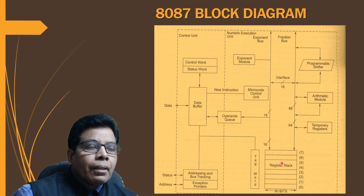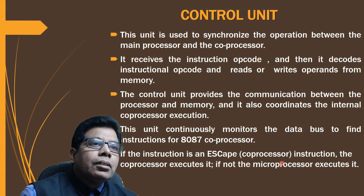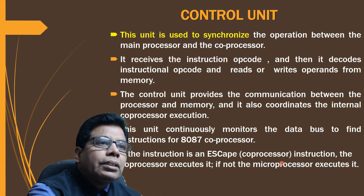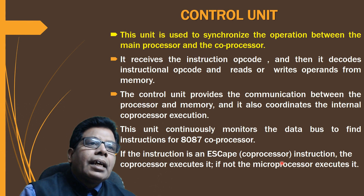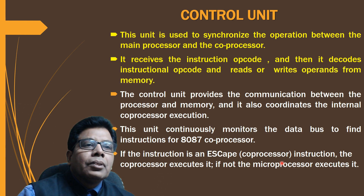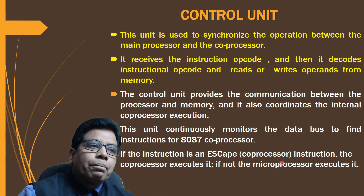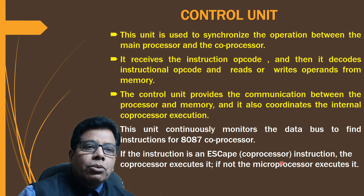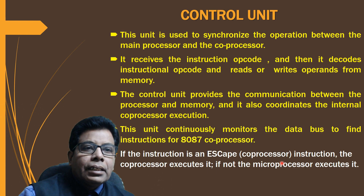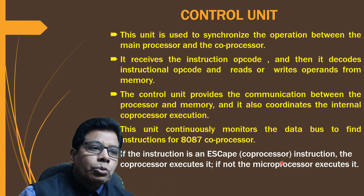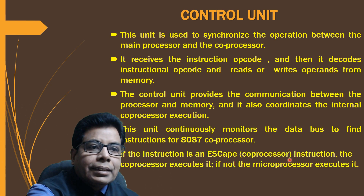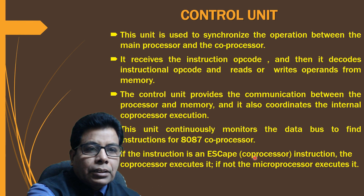The control unit is used to synchronize the operation between the main processor and the co-processor. It receives the instruction opcode, decodes it, and reads or writes operands from memory. The control unit provides communication between the processor and memory and coordinates internal co-processor execution. It continuously monitors the data bus to find instructions for the 8087 co-processor — if the instruction is an escape instruction, the co-processor executes it.